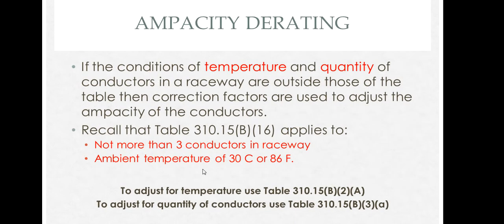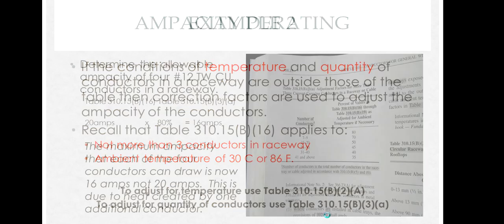If the conditions are outside of these properties of temperature and quantity, you have to derate the conductor based on certain factors. Those factors are found at these tables, and I'll do a couple of examples.